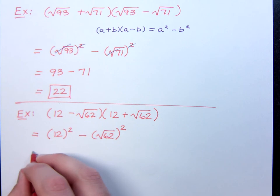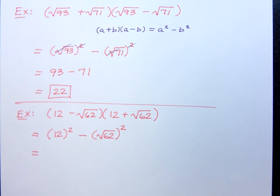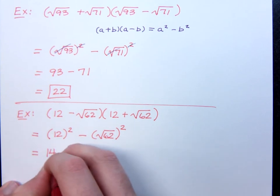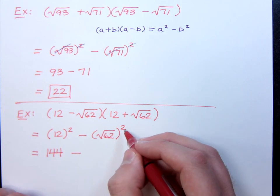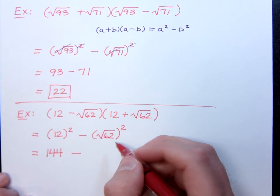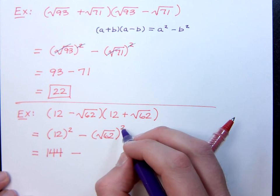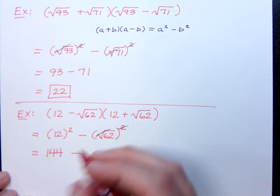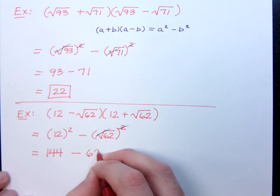Now, notice here that I actually have to square 12. 12 is not being protected from the squaring. See, the square root kind of protects you a little bit. This guy has no protection, so what happens when you square 12? 144. You get 144 minus, now over here, the 62 had some protection, right? He had some protection, so when the square comes, the square will destroy the house, but the 62 is okay, right?